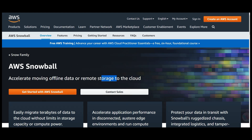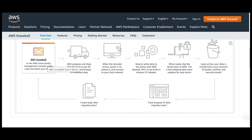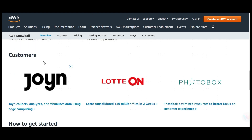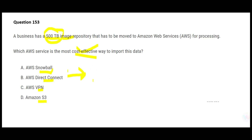The means to move the data is Snowball. You move data offline — a storage box is delivered to your campus, you copy the data, it gets dispatched back, and your data is plugged into the AWS network. Snowball comes in different flavors: storage only, or compute and storage combined. In this case you just need to move terabytes of data with no compute required, so Snowball is perfect — cost-effective and fast. That is my final answer.